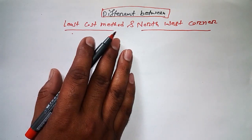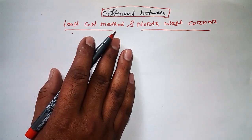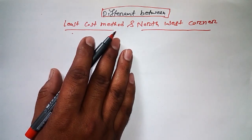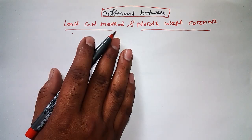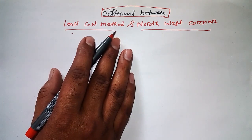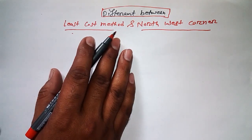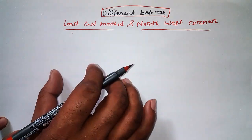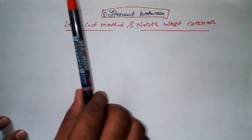So here today I'm going to share with you the difference between Least Cost Method and Northwest Corner Rule method. The basic difference is in the result. If you solve a question, take any question and solve it.